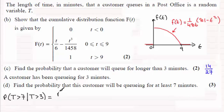This is going to be the probability that T is greater than seven, and it's divided by the probability of the given event. So that's the probability that T is greater than three. Conditional probability then.